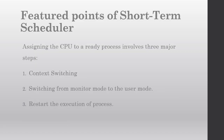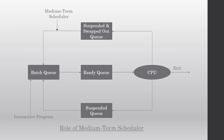Whenever we assign the CPU to a ready process, it takes three major steps. First of all, context switching. Then, switching from monitor mode to user mode, and then restarting the execution of the process.